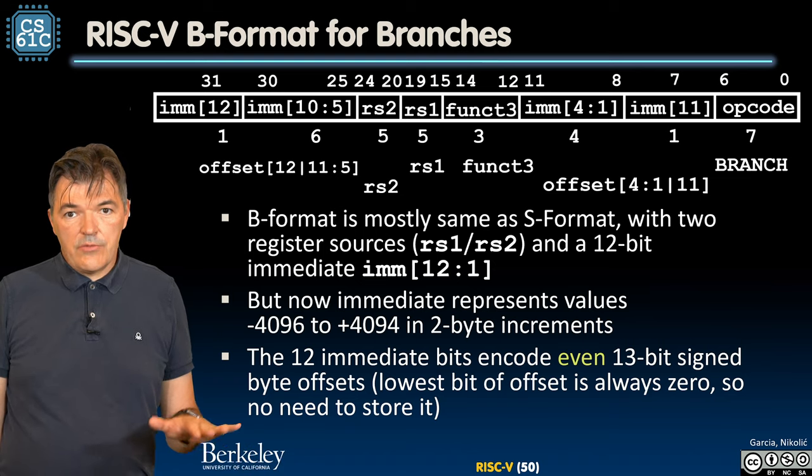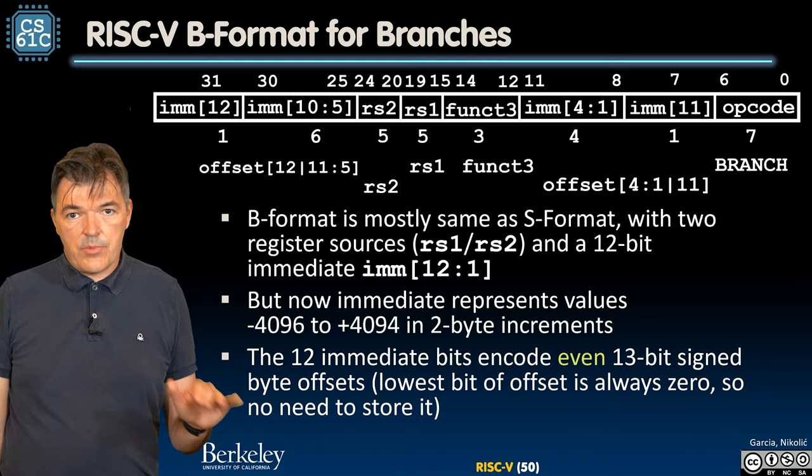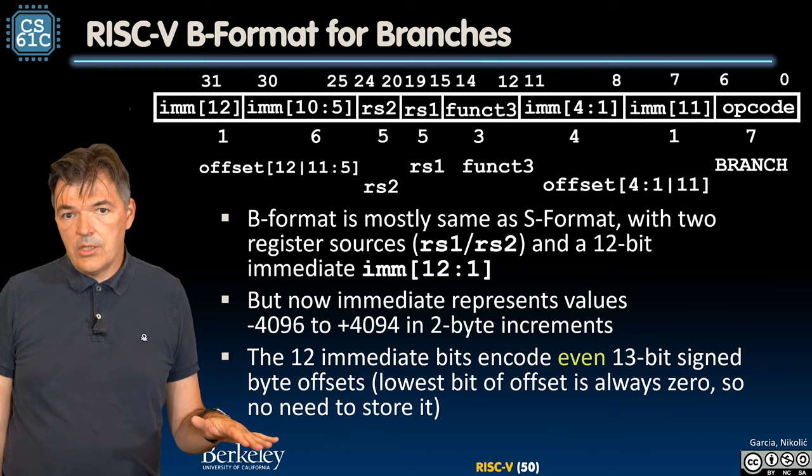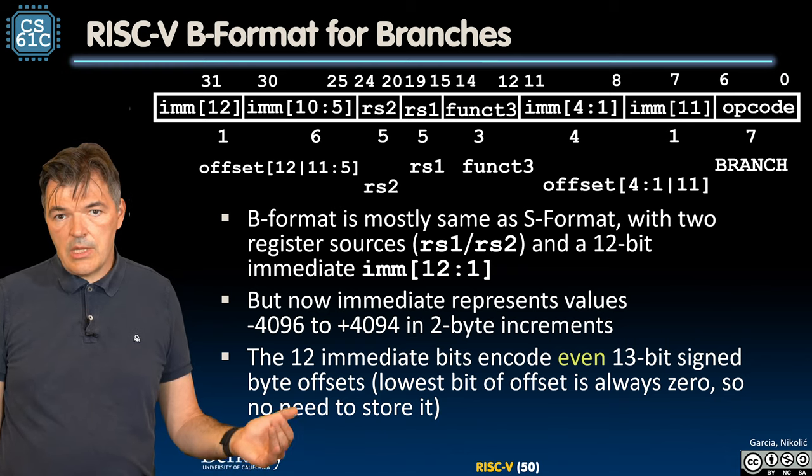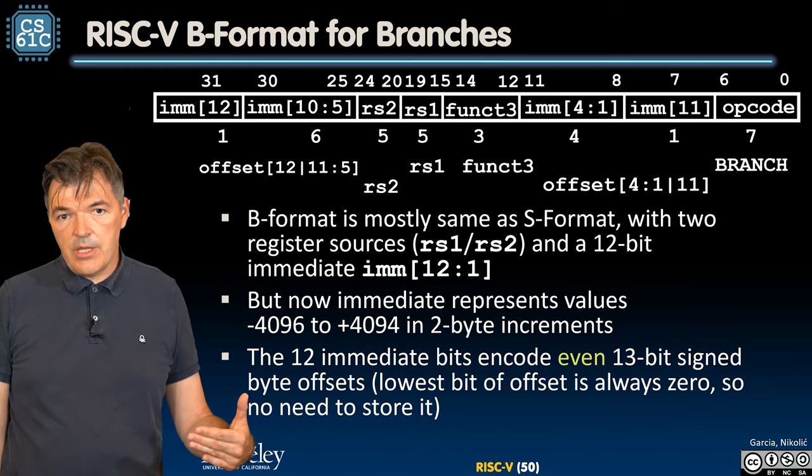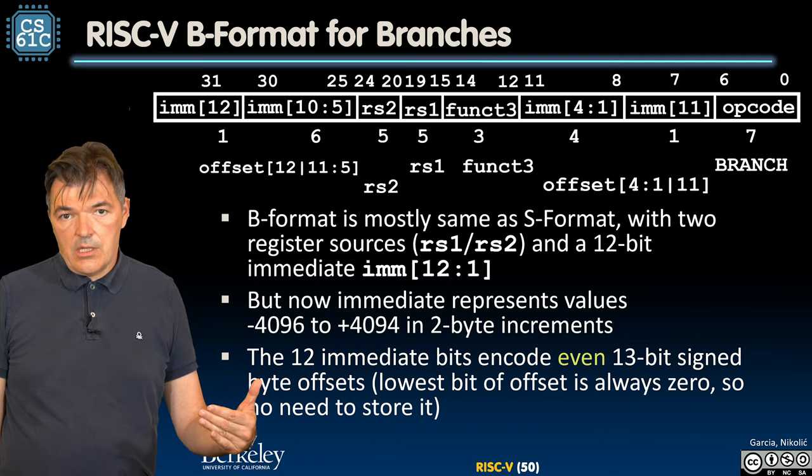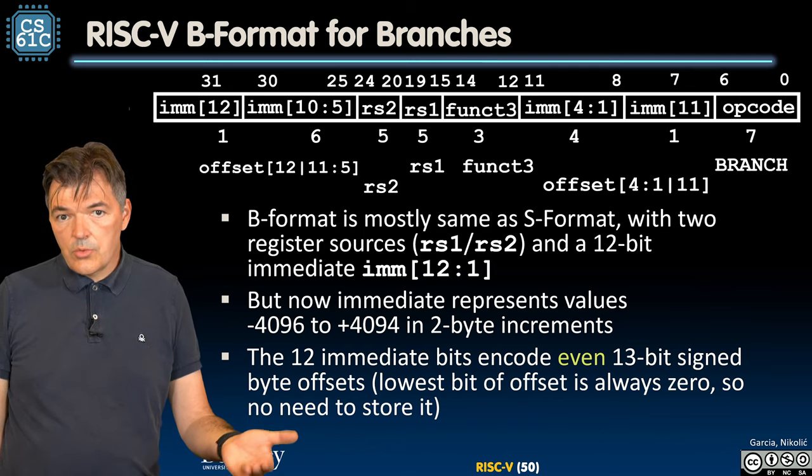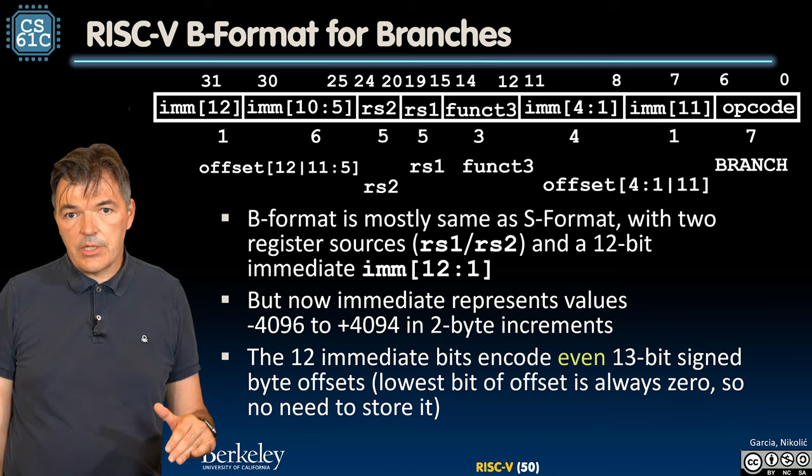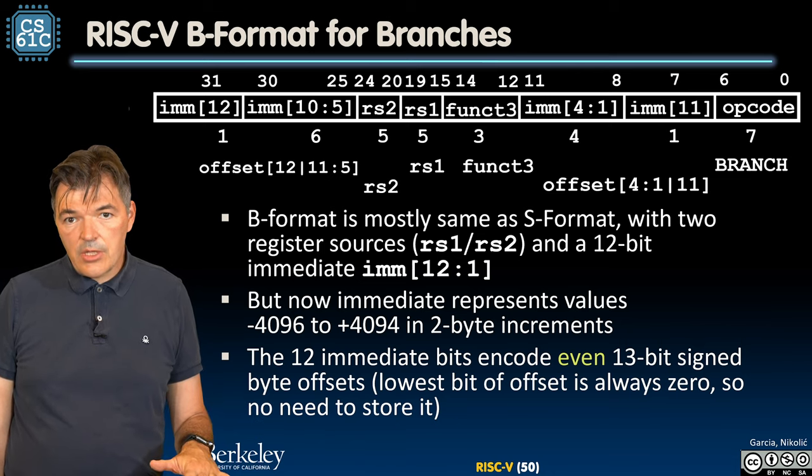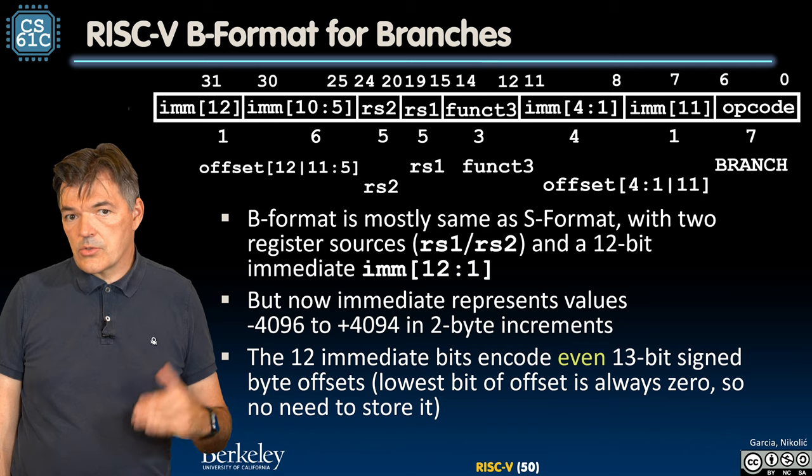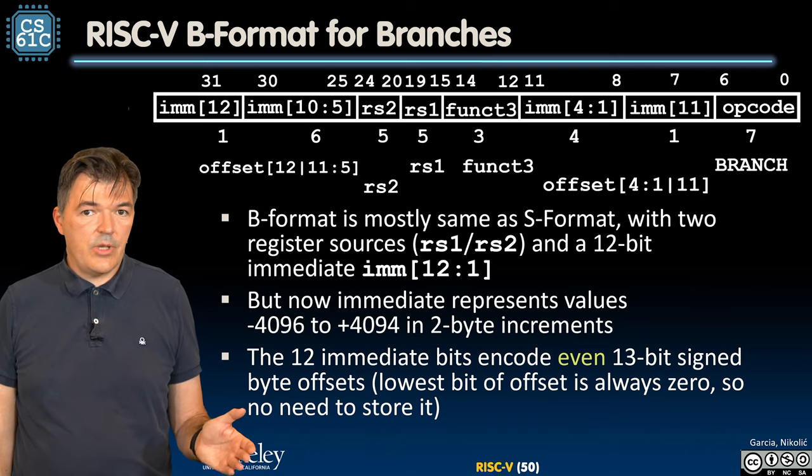So if the branch condition is met, the program counter is updated to a new address that is specified as the offset, immediate offset to the current value of the program counter. If the branch condition is not met, then it goes to the next instruction which is four bytes away.